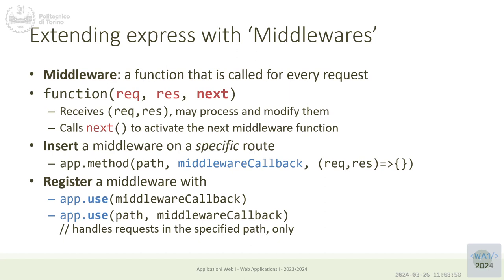The idea is that these middlewares are called — in sequence if there are more than one — before my own callback. They receive a copy of the request and the response and can do some pre-processing on them. So we receive a request and a response where some fields are already filled with extra data or some operation has already been done. We can execute a middleware in a specific method, or if we want it to be executed on all requests, we can use the app.use syntax — registering the middleware on the whole application so it will be automatically called before my callback every time.